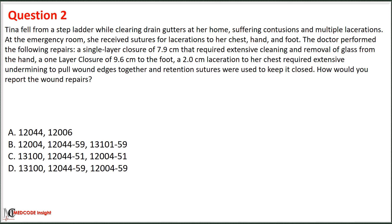How would you report the wound repair? Option A: 12044 and 12006. Option B: 12004, 12044 with modifier 59, and 13101 with modifier 59. Option C: 13100, 12044 with modifier 51, and 12004 with modifier 51. Option D: 13100, 12044 with modifier 59, and 12004 with modifier 59.